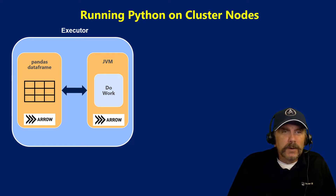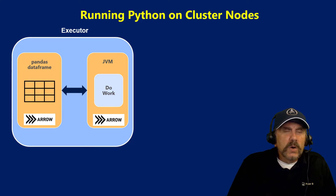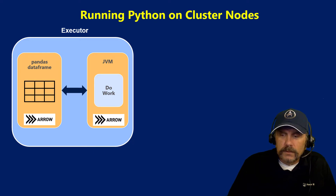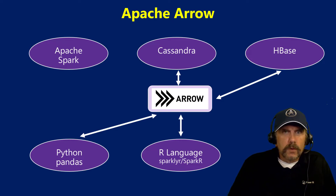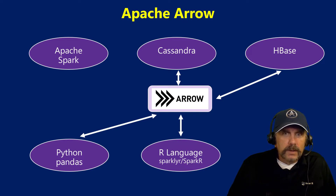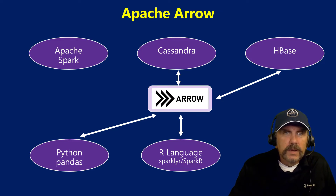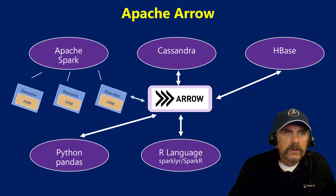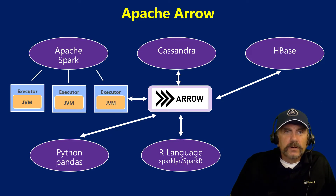It's all just going to go smoothly. We don't have to worry about this transferring back and forth. And that's a game changer because it means that Python code can now operate as fast as Scala or other languages on Spark. Arrow is not just designed to provide a common format for Python — it provides a common way to share information between Cassandra, HBase, R for that matter, and of course pandas. And the executors on Spark also use the arrow format.